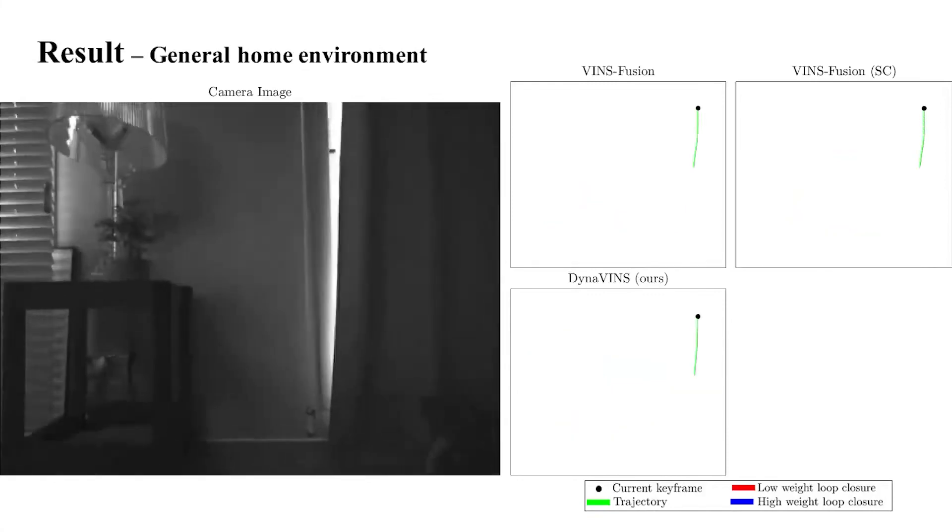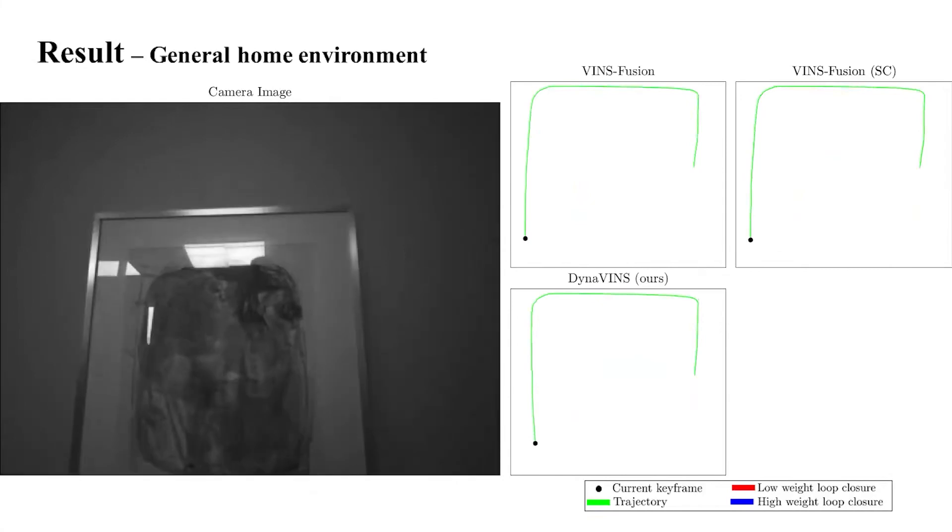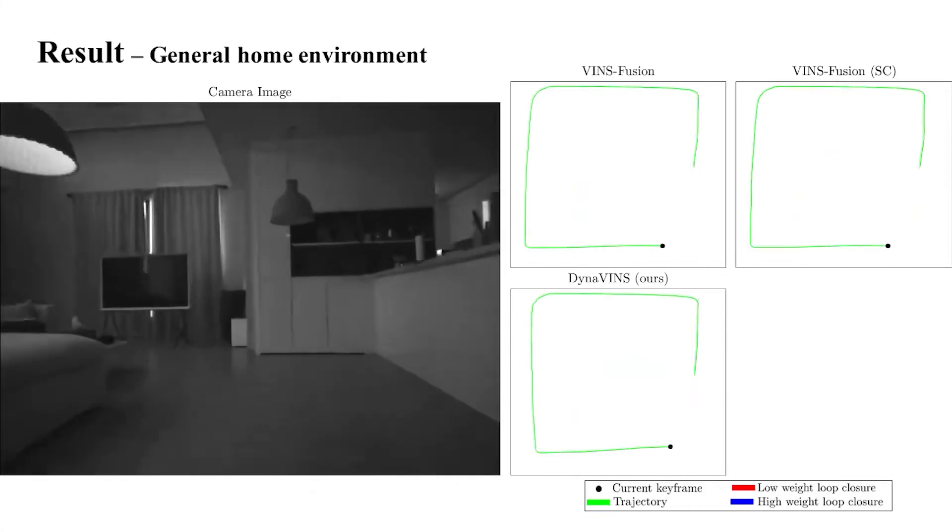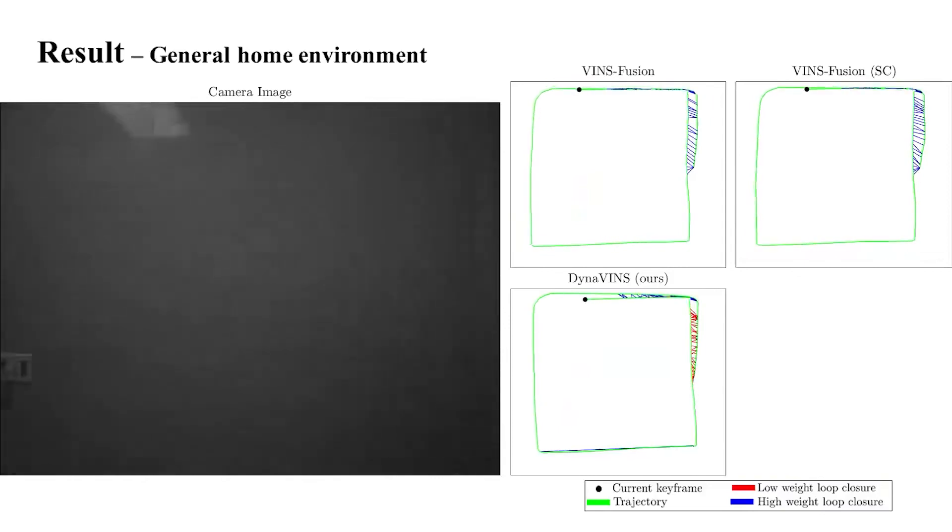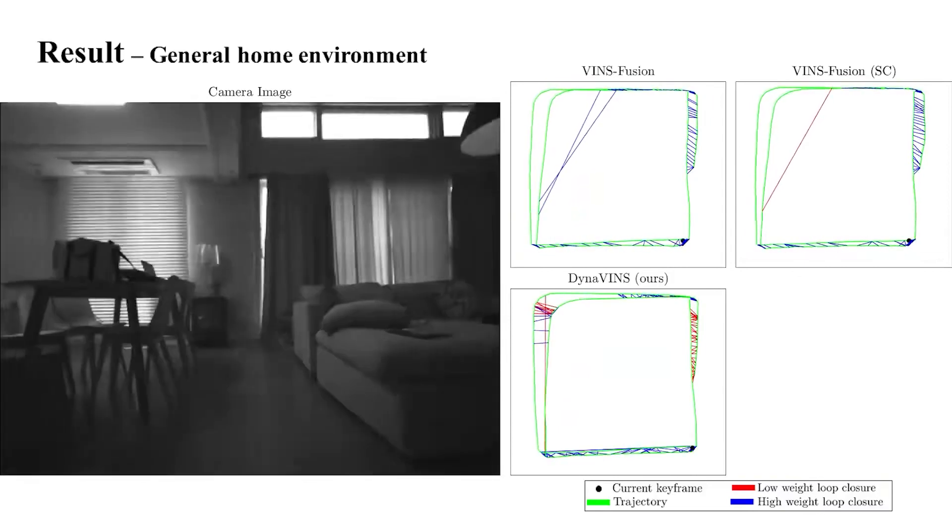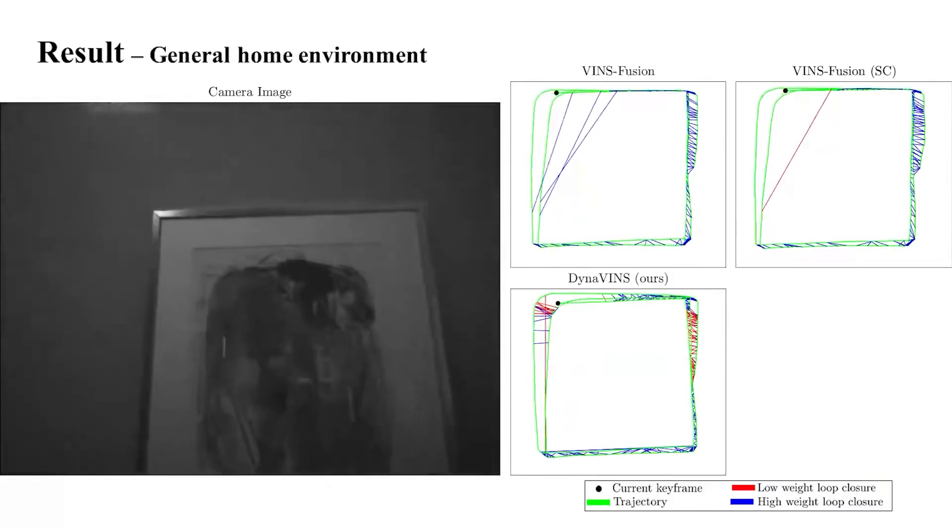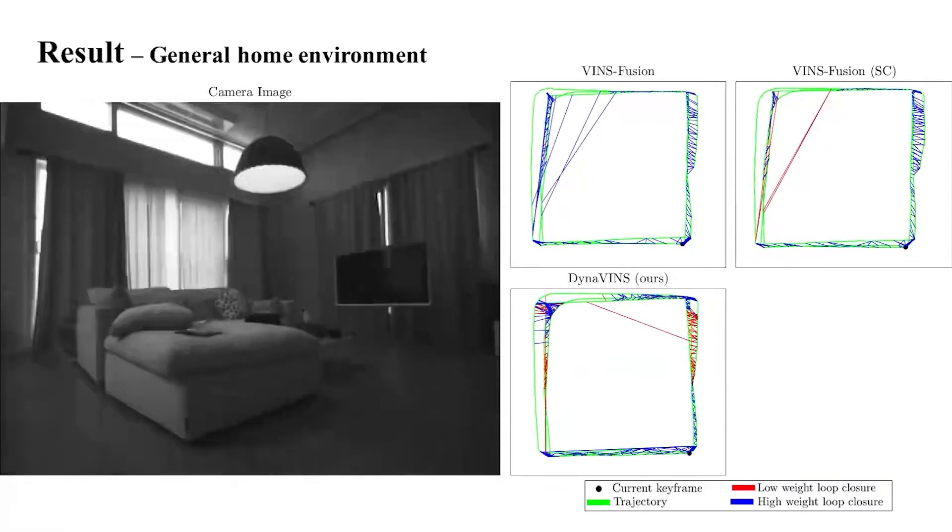To check the feasibility for real-world applications, we tested algorithms in the general home environment. Note that this is just for qualitative comparison. As you can see, VINsFusion has an inaccurate trajectory due to temporarily static picture frames, while ours is not affected by them.